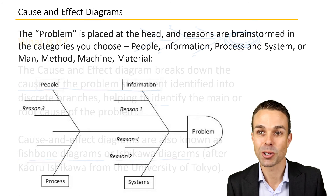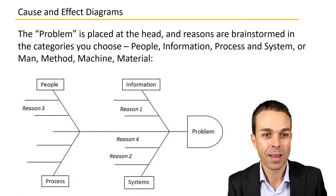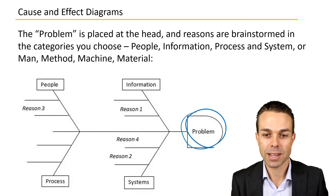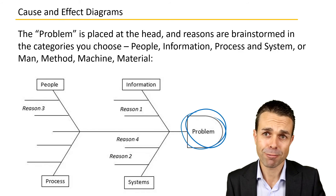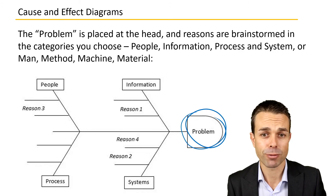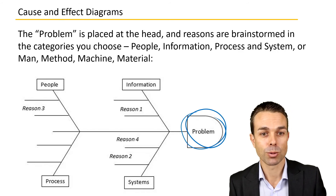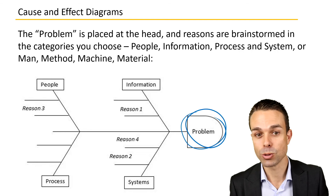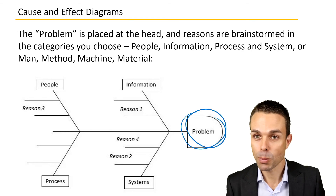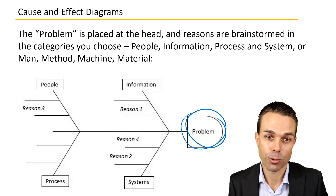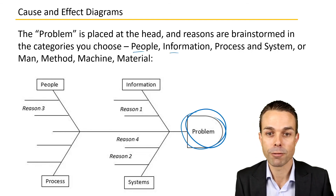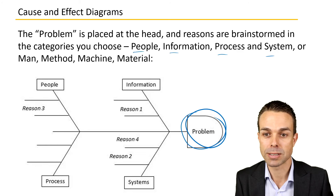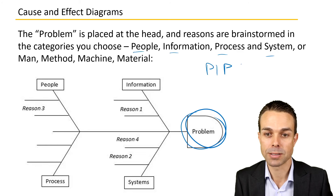Let's look at a quick example. The problem statement is placed at the head of the fish or fishbone, and the reasons are brainstormed in categories that you might choose. Some popular categories that you'll find are people, information, processing, system — or PIPs as it's known.